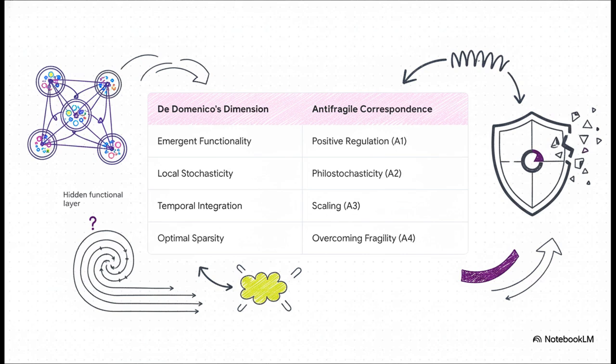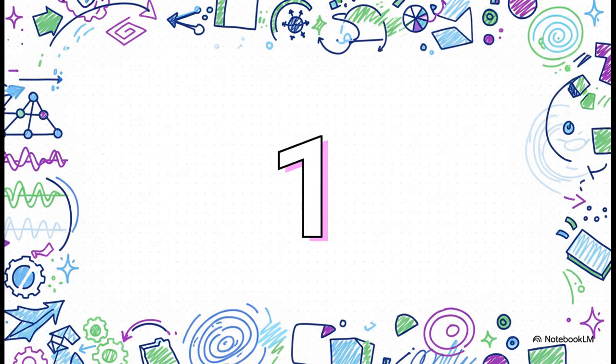The local randomness in the physics model, that maps directly to what Taleb calls philostocustacity, a love of randomness. It's this beautiful convergence of ideas from two totally different fields.